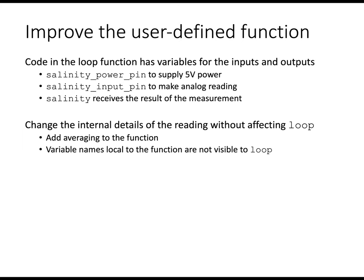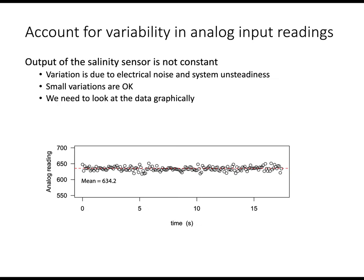We're going to do that. But first, let's talk about the averaging. Experience shows that the output of the salinity sensor varies with time. This plot here at the bottom of the page indicates for a particular salinity of water that's circulating in the fish tank. As we repeatedly make these measurements over time, the actual reading fluctuates slightly. The variation is due to electrical noise and some system unsteadiness. These variations are okay. However, we should look at them in a little bit more detail so that we can see whether the variations are acceptable.